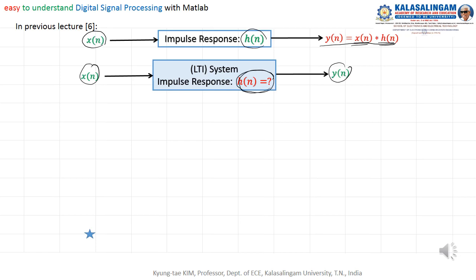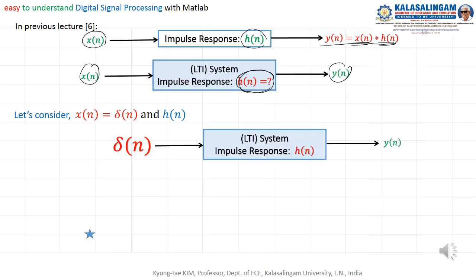For this, let me consider the following. We are using the delta function as input — instead of x(n), we are using delta function δ(n). Then from this, if we know the output, we can calculate y(n). Let's calculate output y(n): y(n) equals input δ(n) convolved with h(n).